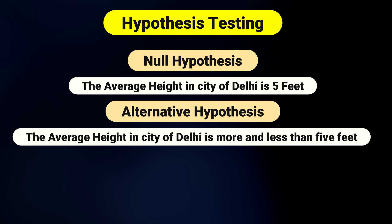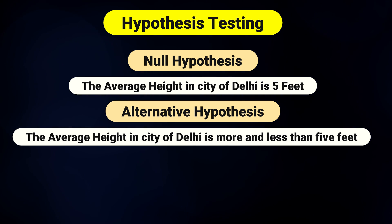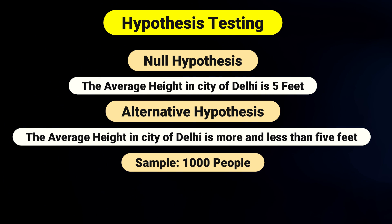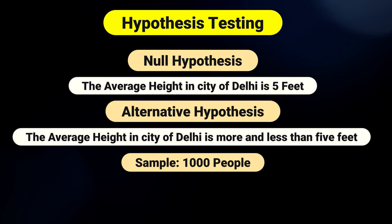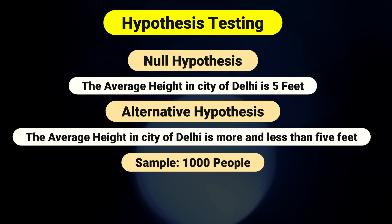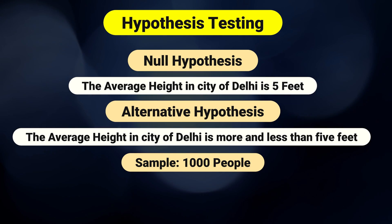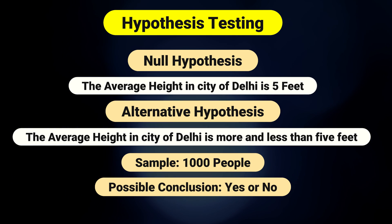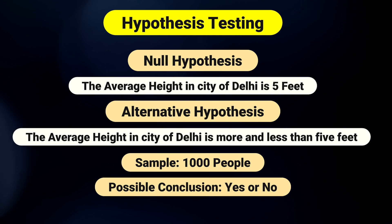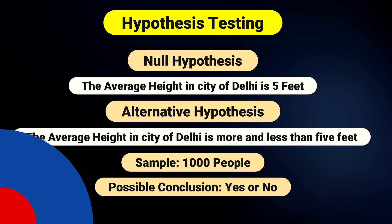You can't measure every person in the city, so you measure a small group — let's say 1,000 people. This small group is your sample, representative of the larger population of Delhi. You use the data from this smaller group for testing your hypothesis and come to a conclusion about whether the average height of Delhi is 5 feet or more. This entire process is what is called hypothesis testing.